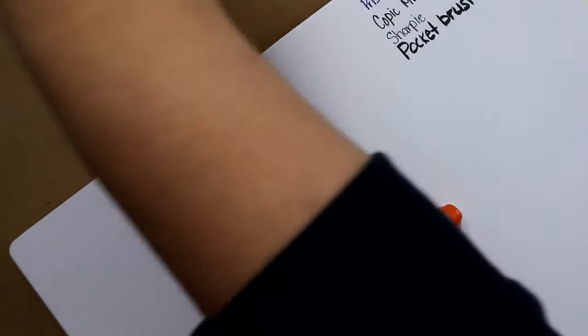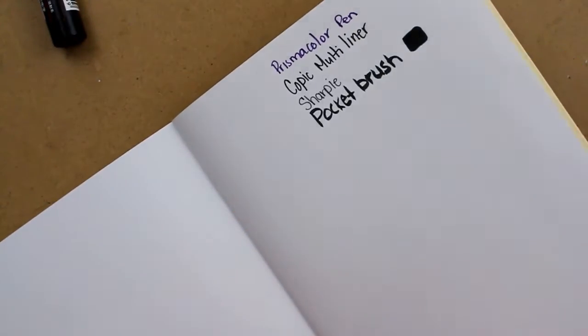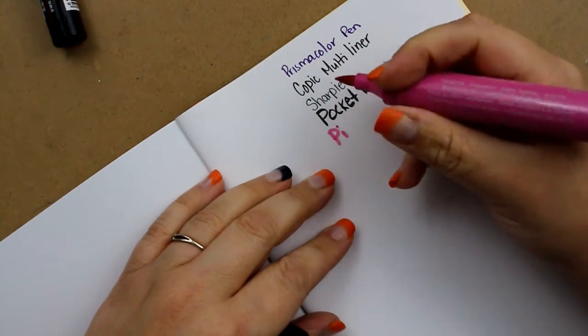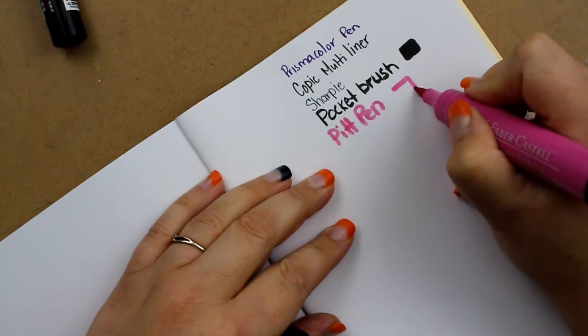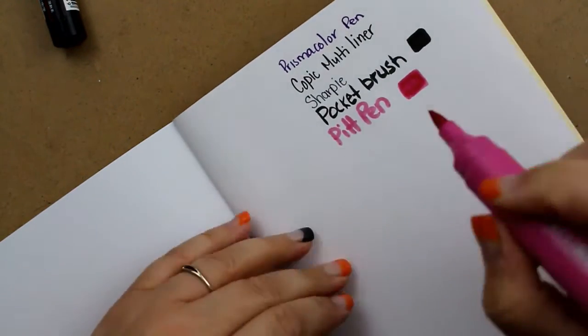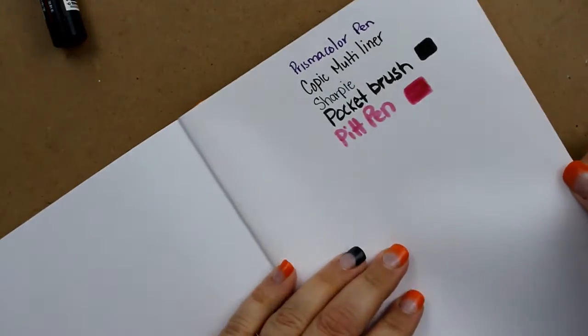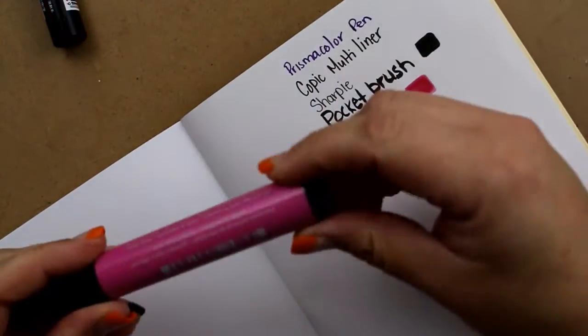So the next thing that I sometimes use in my journals or my sketchbooks are these Faber-Castell pit pens. So I am just going to write pit pen. And I'm again going to make that color swatch right there. I'm going to color that in. Now the paper just started to deteriorate there. So I'm assuming this is going to go through quite a bit. Well, not as much as the pocket brush, but paper doesn't really hold up well to wet mediums.